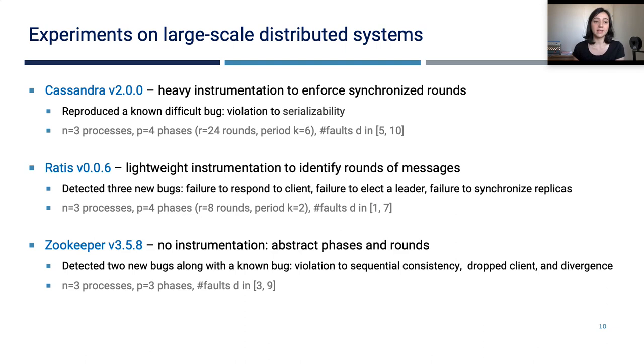We applied our algorithm to three large-scale distributed systems: Cassandra, having an implementation of Paxos; Rattis, an implementation of a Raft consensus algorithm; and Zookeeper with Zookeeper Atomic Broadcast Protocol. The major challenge in implementing our algorithm is instrumenting the system under test to identify the rounds and phases in an execution. For this, we present three alternative implementations.